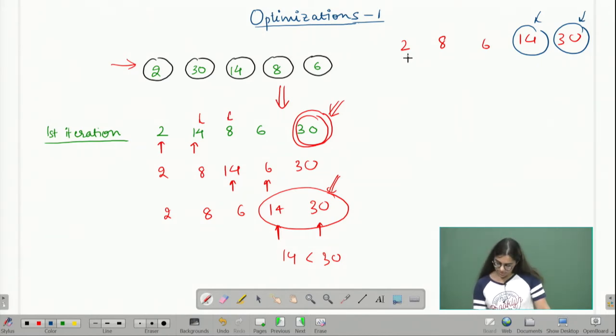When I run the next iteration, I compare 2 and 8. These are in the correct relative order, so I do not need to swap them. I move on to 8 and 6. I need to swap these. So I get 2, 6, 8, 14, and 30.